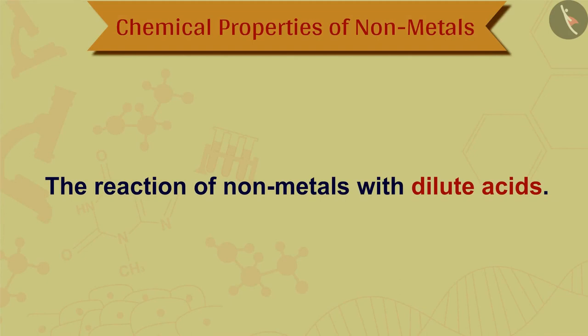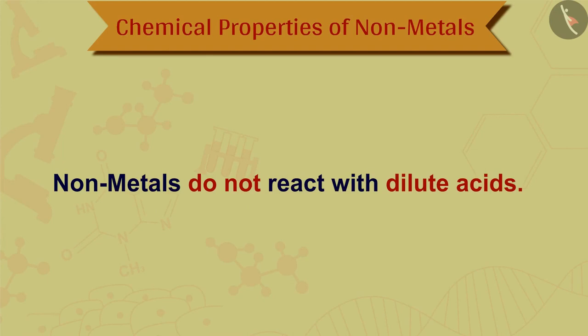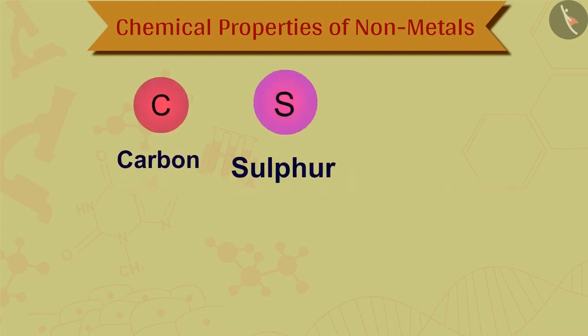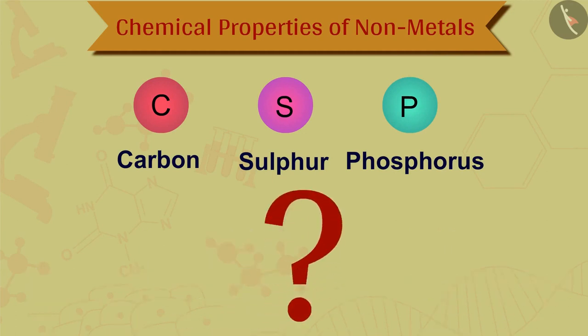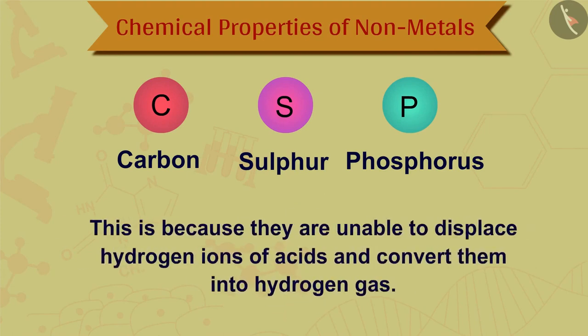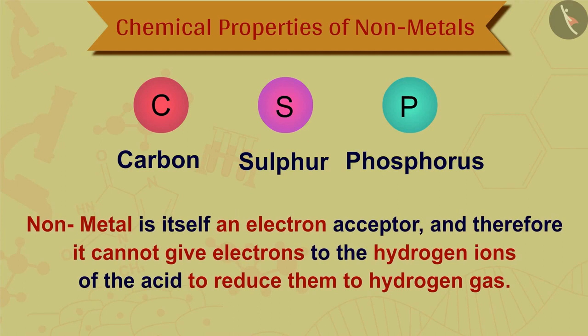You will be surprised to know that Non-Metals do not react with Dilute Acids. For example, Non-Metals like Carbon, Sulphur and Phosphorus do not react with Dilute Hydrochloric Acid or Dilute Sulphuric Acid. This is because they are unable to displace Hydrogen Ions of Acids and convert them into Hydrogen Gas. A Non-Metal is itself an Electron Acceptor and therefore it cannot give electrons to the Hydrogen Ions of the Acid to reduce them to Hydrogen Gas.